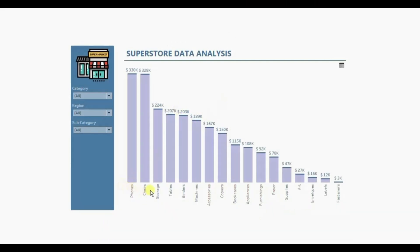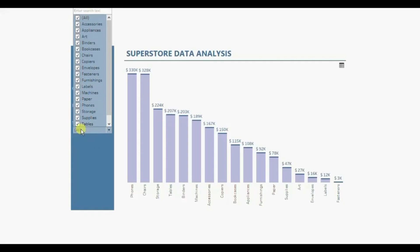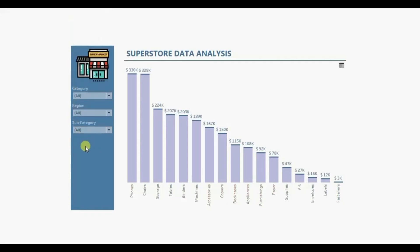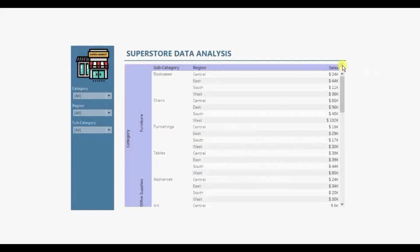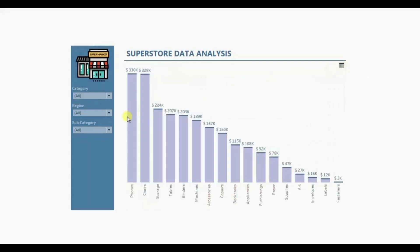Here I have a bar chart that shows sales for different subcategories, and on the left hand side I have added a few filters like category, region filter, and the subcategory filter. There might be a requirement where a user also wants to see this bar chart in the form of a text table with some additional columns. Clicking on this button will show us the text table that gives us sales done for different subcategories in each of the regions, and clicking on this close button will hide this text table and we will see the bar chart.